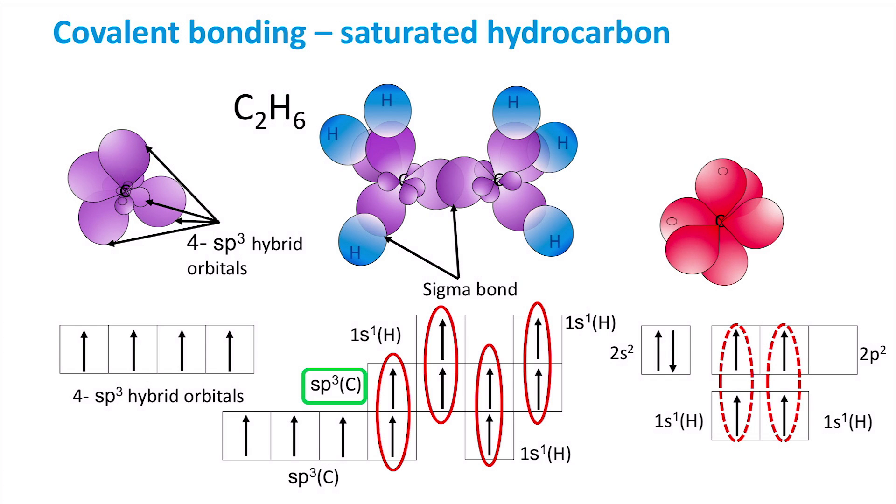If all of the lone pair electrons, so all the valence electrons in the carbon atom form sigma bonds, the hydrocarbon molecule is called a saturated hydrocarbon.